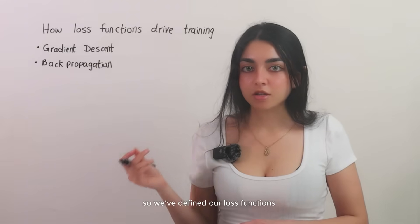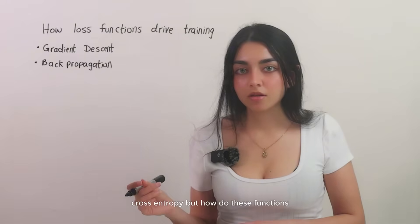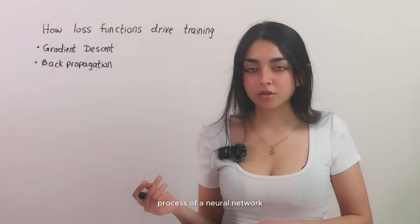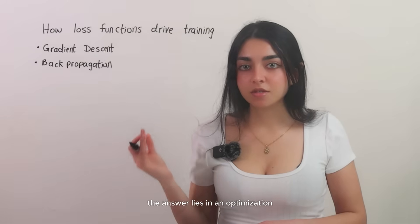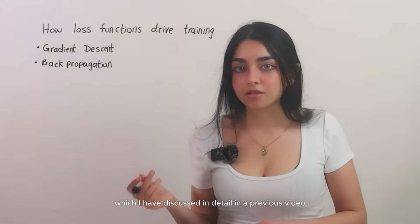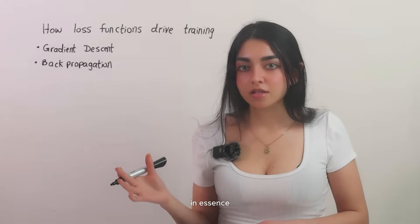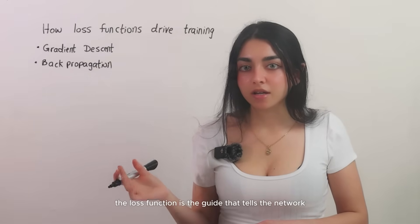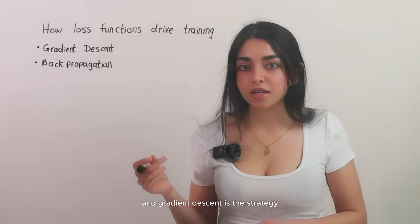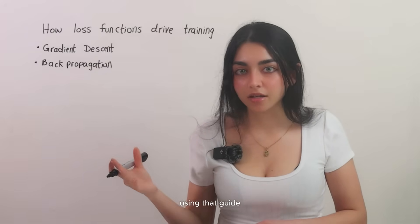So we've defined our loss functions MSE, MAE, and cross-entropy, but how do these functions actually drive the training process of a neural network? The answer lies in an optimization process called gradient descent, which I have discussed in detail in a previous video, combined with backpropagation. In essence, the loss function is the guide that tells the network how well it's doing, and gradient descent is the strategy the neural network uses to improve itself using that guide.